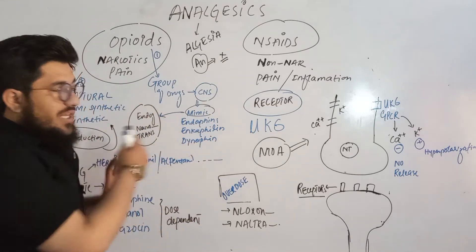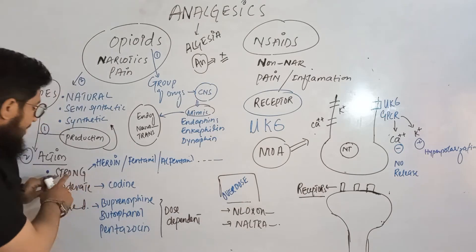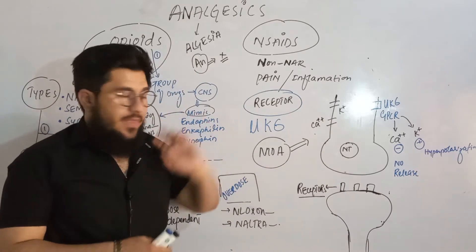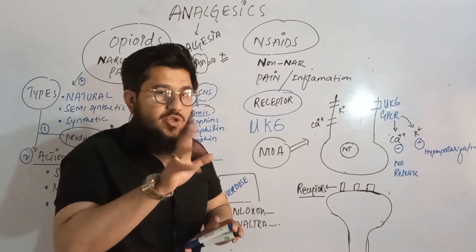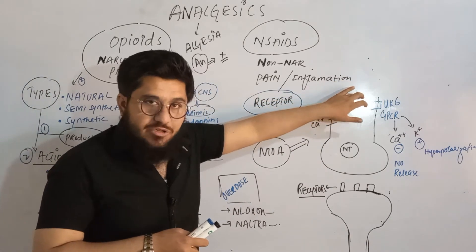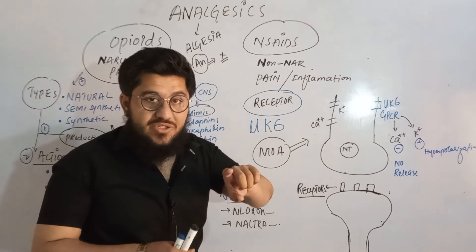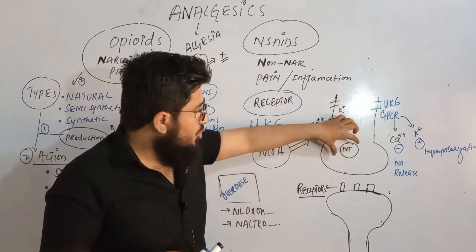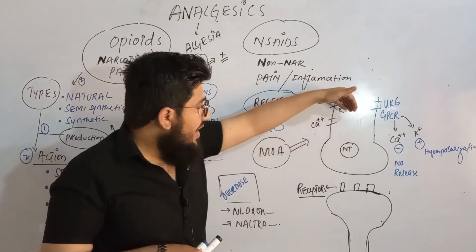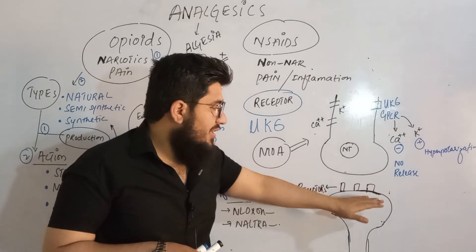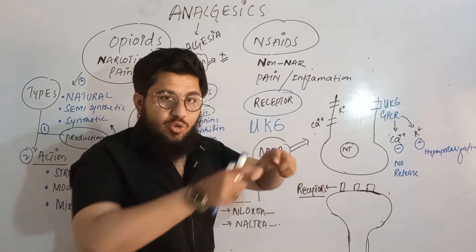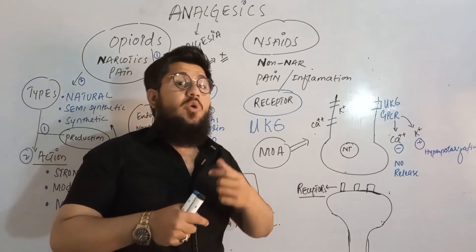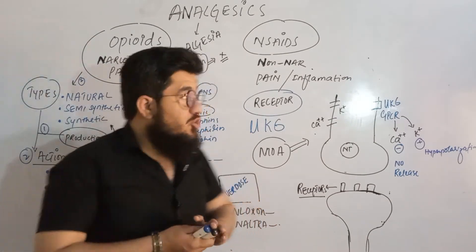Let's look at the mechanism of action through a diagram. When a pain signal is generated, the neuron is sensitized and depolarized to carry the pain signal. The neurotransmitter in that neuron is released into the synapse, and the next neuron carries this signal toward the central nervous system — causing you to feel pain and discomfort.